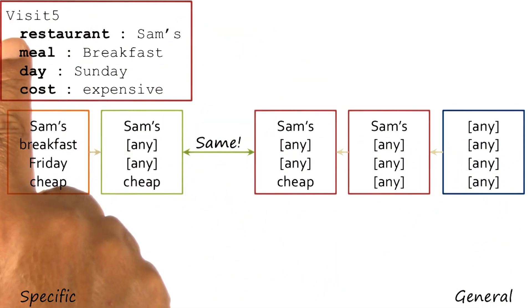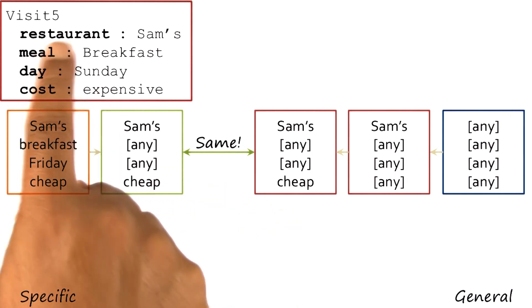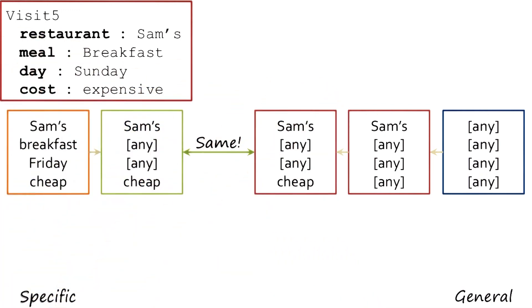We needed five examples in this particular illustration for the convergence to occur. This convergence would have occurred irrespective of the order of the examples as long as the five examples were there.